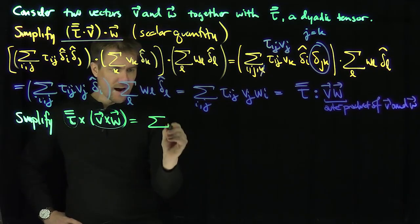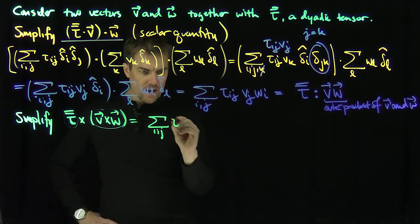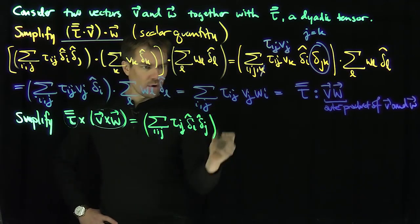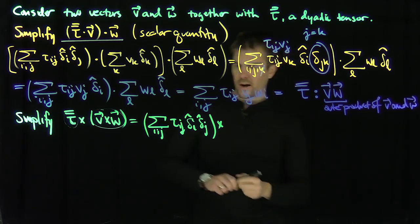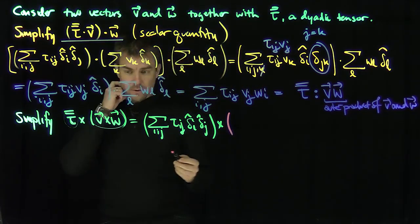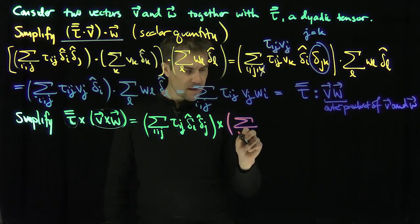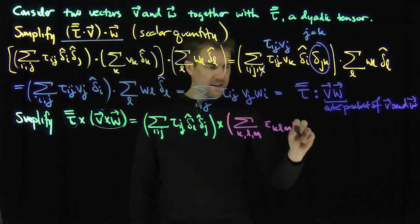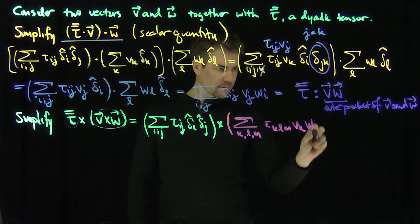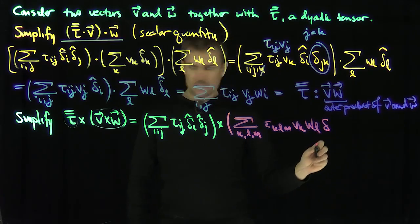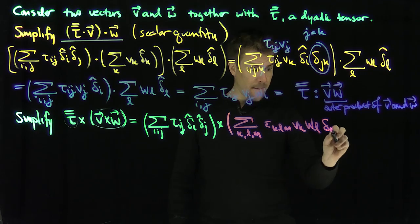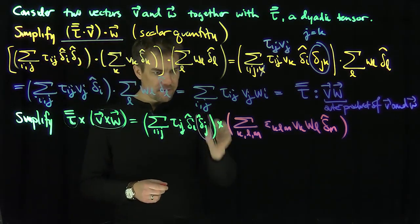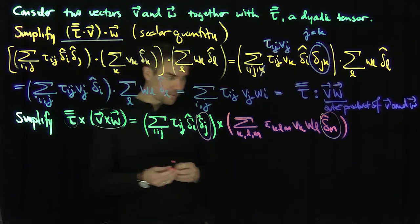Let's write this out carefully. This is the sum over i and j of tau_ij delta-i-hat delta-j-hat. For the cross product expression, we need three indices k, l, m with the epsilon_klm symbol, V_k, W_l, and delta-m-hat. When we combine delta-j-hat with delta-m-hat from the cross product, that gives one more index, which I'll call n. So we now have six summation indices: i, j, k, l, m, n.